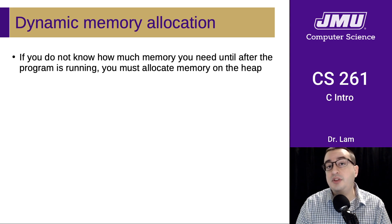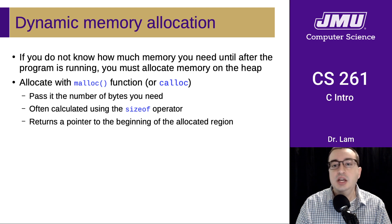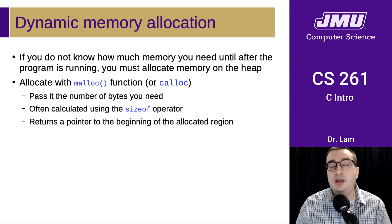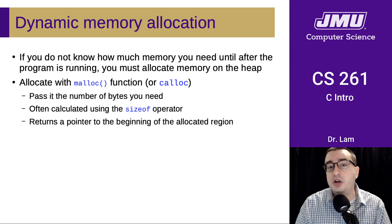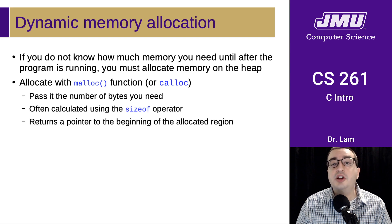Except that now we're going to have to explicitly deallocate memory as well as allocate it. In C, we allocate memory on the heap using the malloc function or one of its derivatives. One of these is called calloc, which we'll be using this semester. Calloc explicitly initializes all the memory to zero, which helps fix bugs more easily. You pass malloc or calloc the number of bytes you need, usually calculated using the sizeof operator so you're not hard-coding magic numbers throughout your program. The function returns a pointer to the beginning of the allocated region.